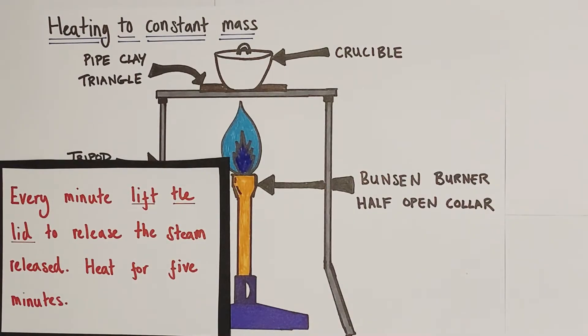Over time as steam is generated and driven out from the hydrate, it's going to build up pressure and it's not going to be able to escape from the crucible. So every minute or so you're going to carefully lift the lid of the crucible using a pair of tongs to release that steam.